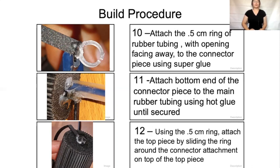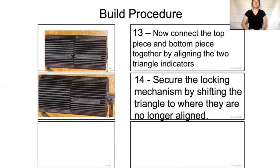Build procedure 11: attach the bottom end of the connector piece to the main rubber tubing using hot glue until secure, ensuring no excess movement for the best prototype experience. Procedure 12: using the 0.5 centimeter ring, attach the top piece by sliding the ring around the connector attachments. Procedure 13: connect the top piece and bottom piece together by aligning the two triangle indicators — there is a notch where the triangle is to secure both pieces together, so it is important that those triangles are aligned to connect the notches. Procedure 14: to lock the mechanism, shift the triangles to where they are no longer aligned.